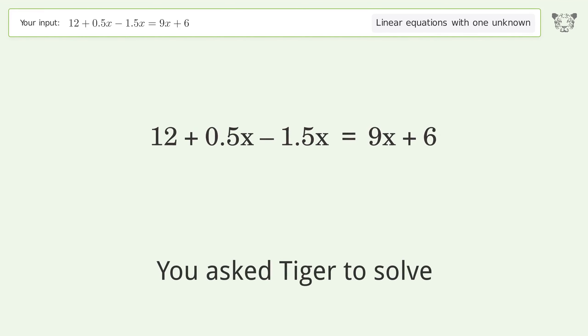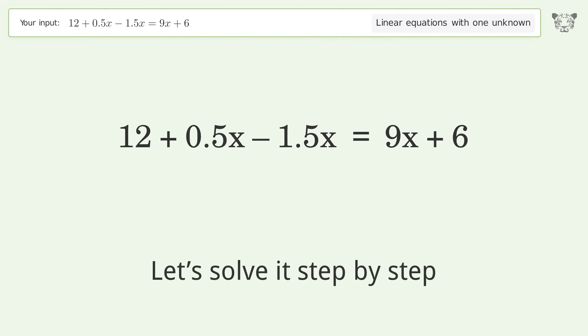You asked Tiger to solve this. It deals with linear equations with one unknown. The final result is x equals 3 over 5. Let's solve it step by step. Simplify the expression.